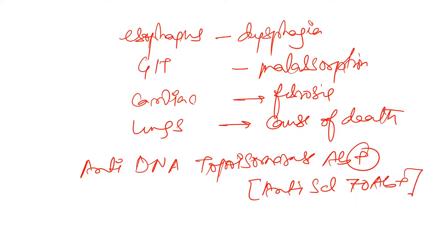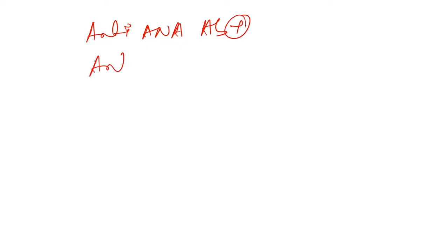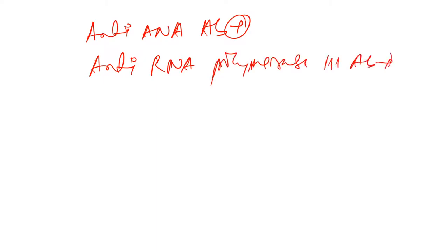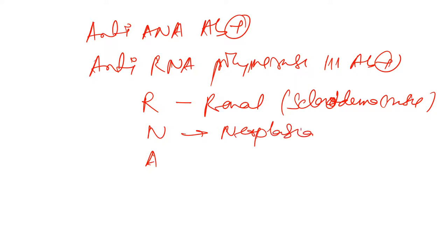You can remember D for diffuse and T for total organ involvement. Besides anti-DNA topoisomerase, diffuse scleroderma also shows ANA antibody and anti-RNA polymerase III antibody. Anti-RNA polymerase III is associated with renal involvement leading to scleroderma crisis, neoplasia, and acute onset.